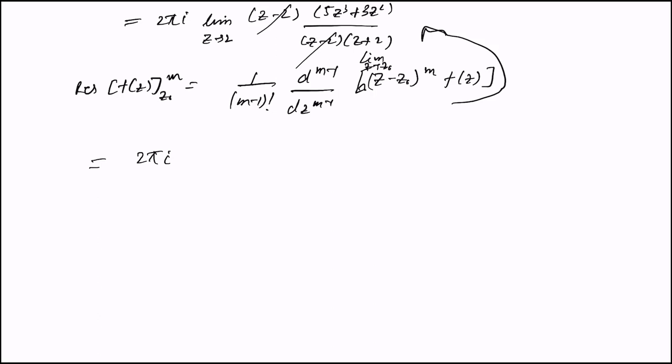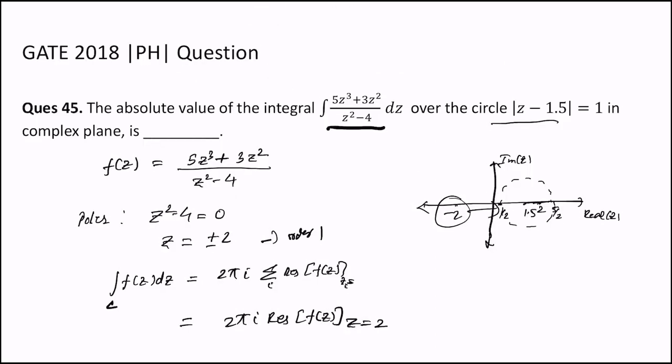Then put in the limit z = 2, so the denominator will be 4, and the numerator is 5(8) + 3(4) = 40 + 12 = 52. So 52/4 = 13, giving us 26πi.